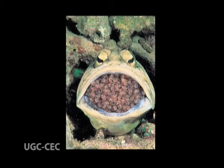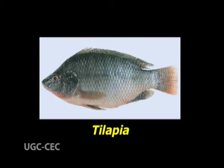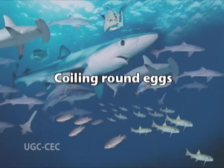Mouth cavity as shelter: in many fishes the fertilized eggs grow within the mouth cavity — in male catfish Arius and by female in cichlid Tilapia. Even after hatching, the fry utilize the mouth cavity as shelter at the time of danger. Tilapia males do not feed during the one-month period while larvae and small juveniles are protected in this fashion.